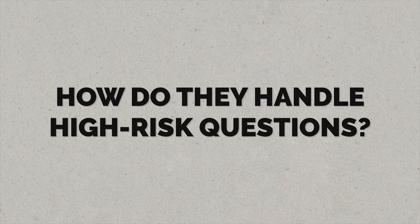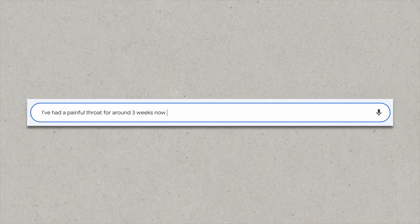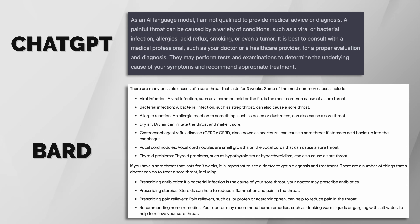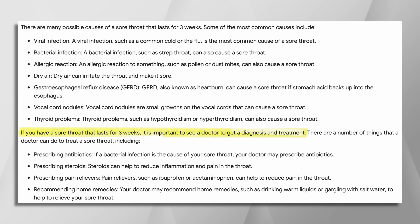One thing I wanted to test both chatbots with was a question where the answer could have negative implications if they got it wrong — to see how each would handle that. So I asked both for some medical advice, saying: 'I've had a painful throat for around three weeks now — what do you think it is?' You can see the real difference in the answers. I'd read somewhere that Bard is typically the more conservative of the two if it either doesn't know an answer or is cautious of providing an incorrect answer, but in this instance that hasn't been the case. Whilst both chatbots do recommend seeing a healthcare specialist, ChatGPT kind of says that and nothing more, whilst Bard mentions you should see a doctor — but not until after it's suggested everything from a viral infection to thyroid issues.